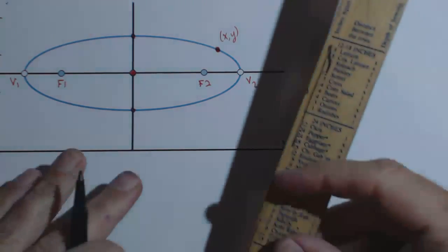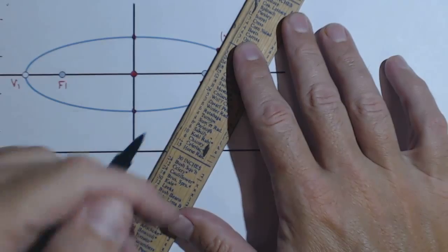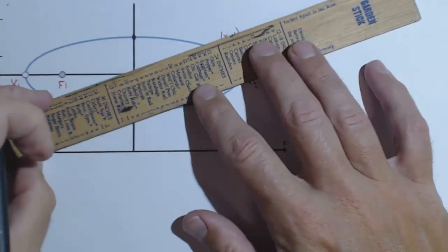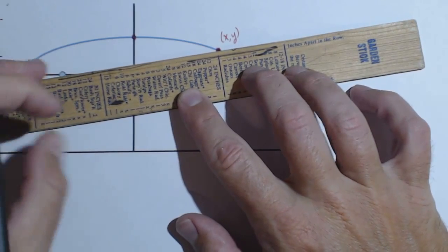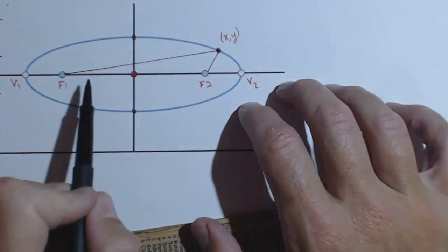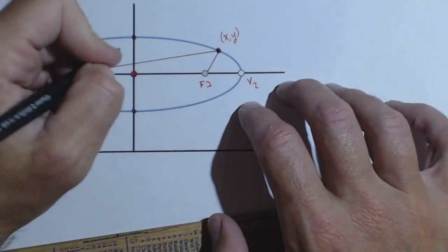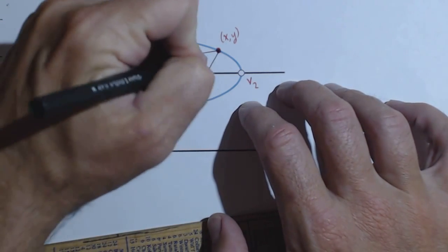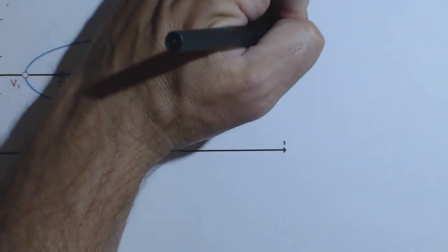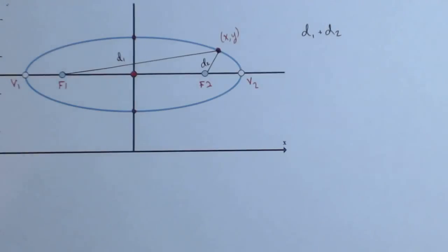Now, what makes an ellipse an ellipse is that the distance from each focus to any point on the ellipse, their sums, is always the same. So let me put in a couple lines here. So the distance of this line plus this line is always going to be the same, D1 and D2. So D1 plus D2 is always going to be the same regardless of what point I use.